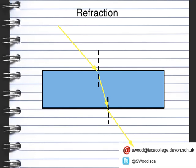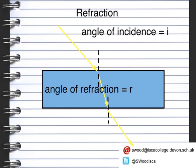We often refer to the angle of incidence as I and the angle of refraction as R. So this angle here is angle of incidence I₁, this is angle of refraction R₁, and then we also have angle of incidence I₂ and angle of refraction R₁ on the exit side.